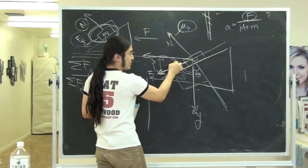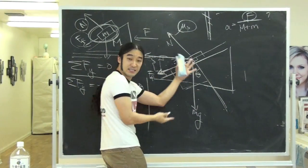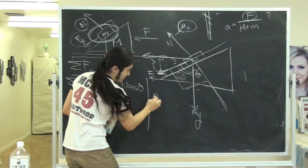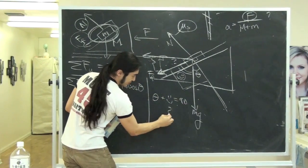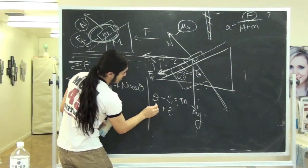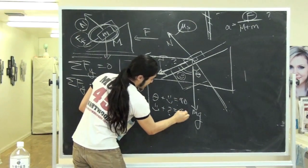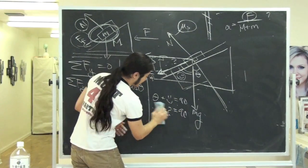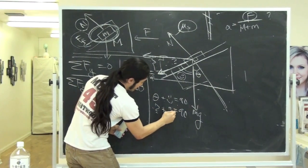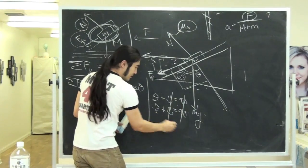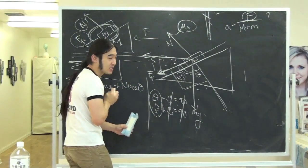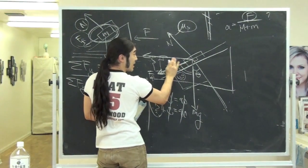So obvious, if I have theta plus smiley is 90, and mysterious guy plus smiley is 90, then it's clear, these guys have to be the same. So this guy actually ends up being theta.